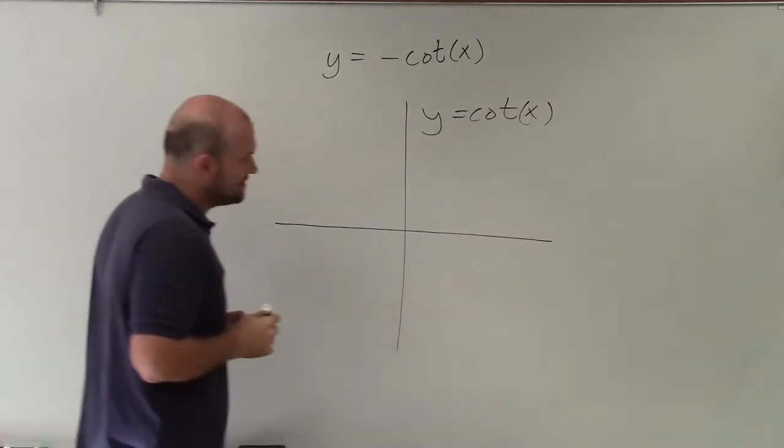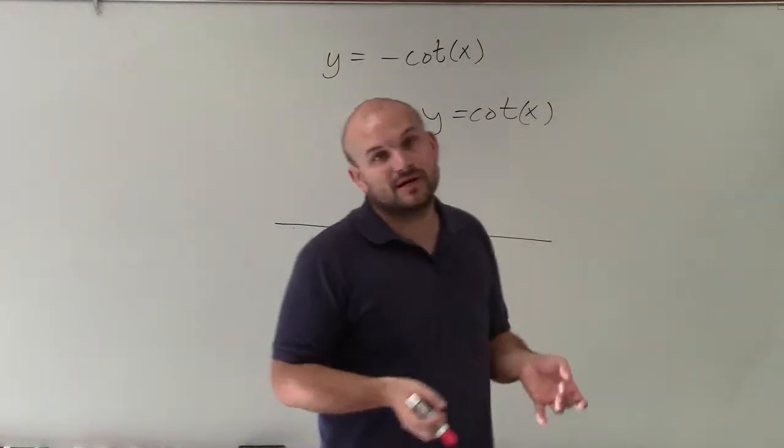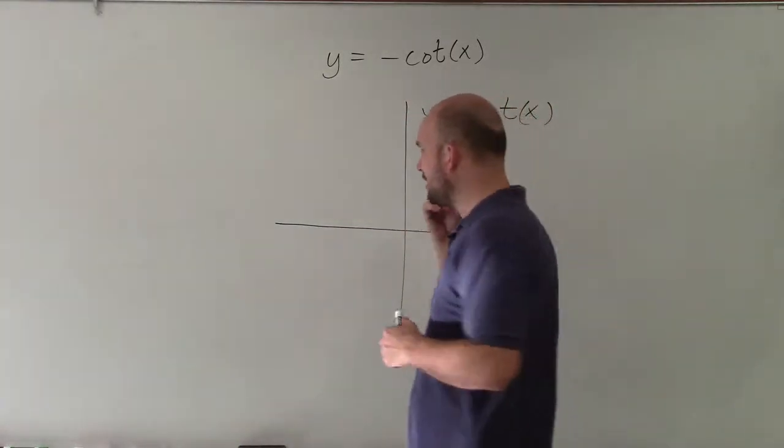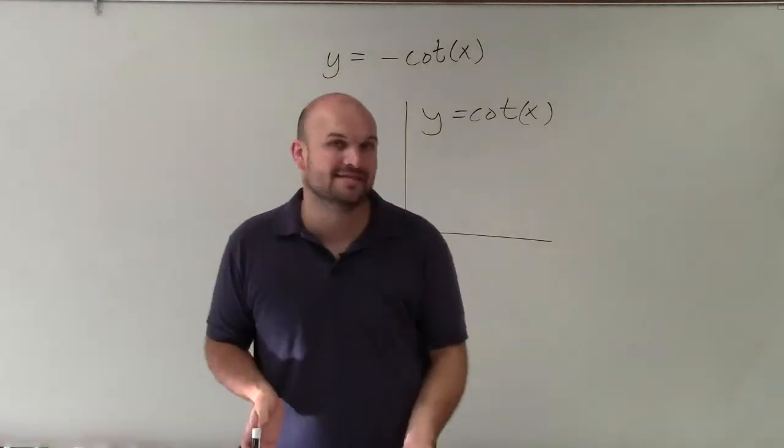When graphing this, the main important thing is now, instead of having a period of two pi, like for sine and cosine, we now have a period of pi. And also, when we're dealing with the cotangent graph and tangent graph, we now have asymptotes.